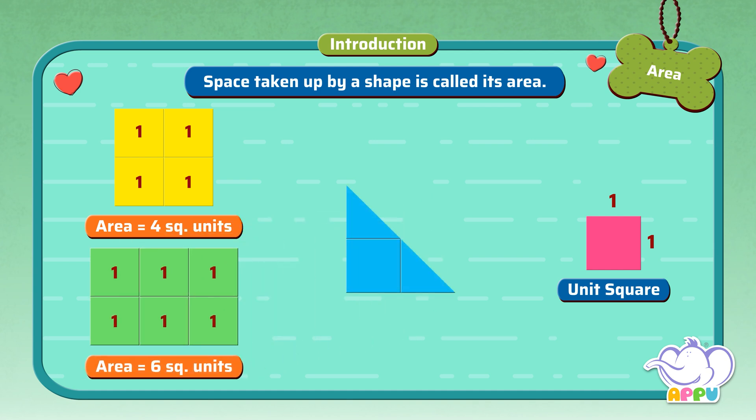This is a triangle. We see that few of them are half squares. This is one square. This is half square. And this is another half square.